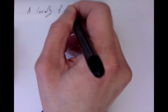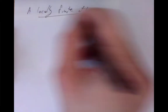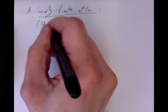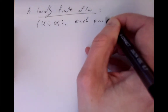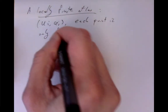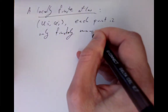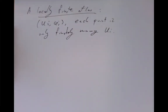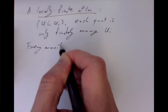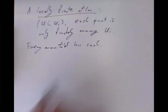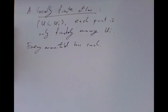A strong topology on smooth maps from manifold P to manifold Q is the topology generated by all of these U'. To make this more concrete, we examine the topology in coordinate chart descriptions. We look for a locally finite atlas — an atlas of charts {Uᵢ, φᵢ} such that each point lies in only finitely many of the Uᵢ's. Every manifold has one of these.